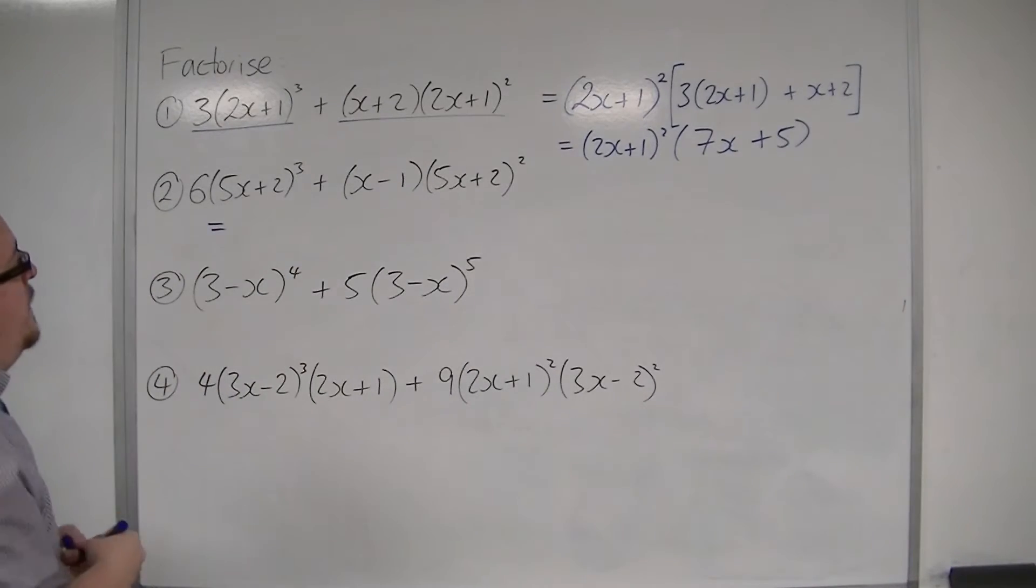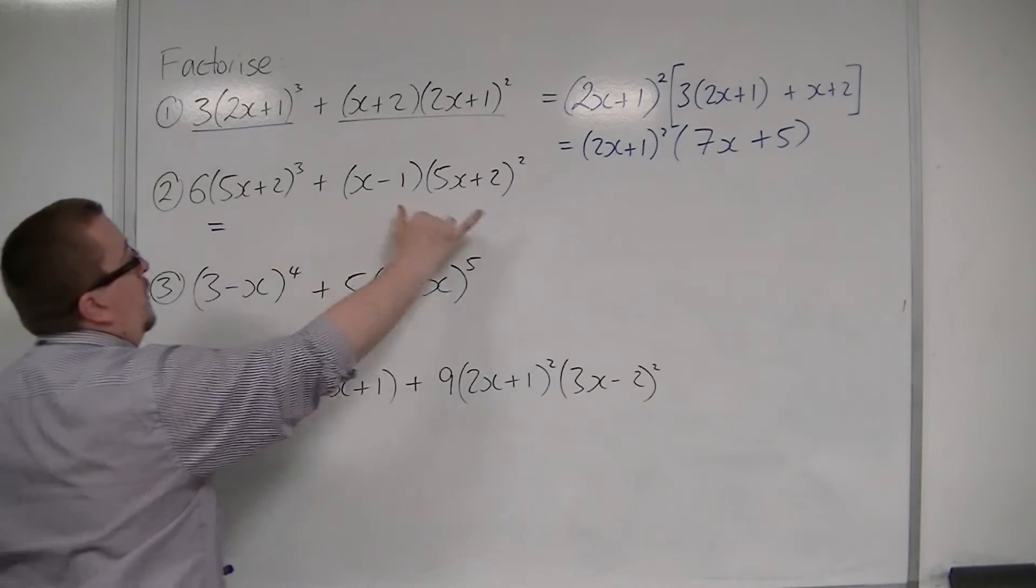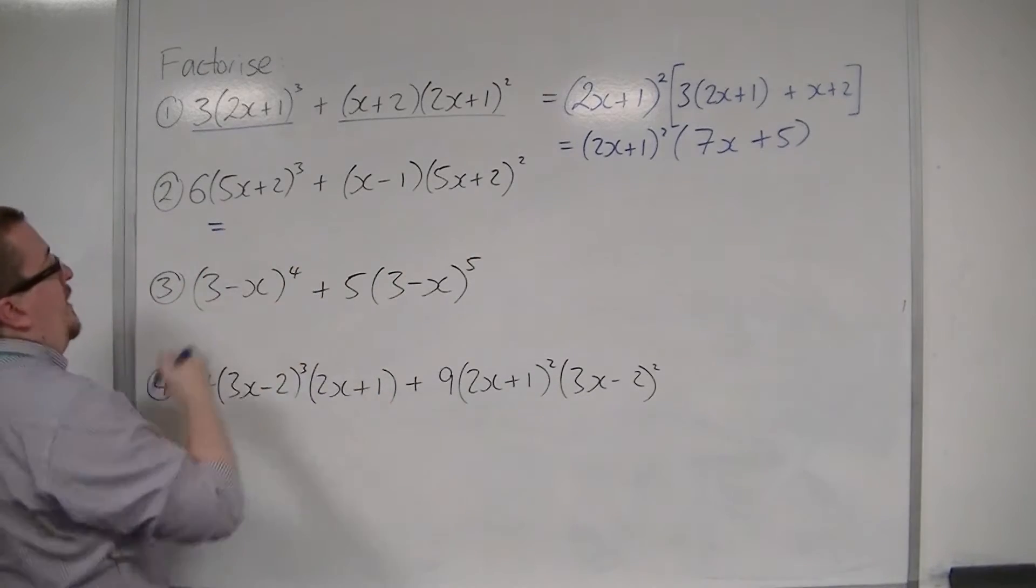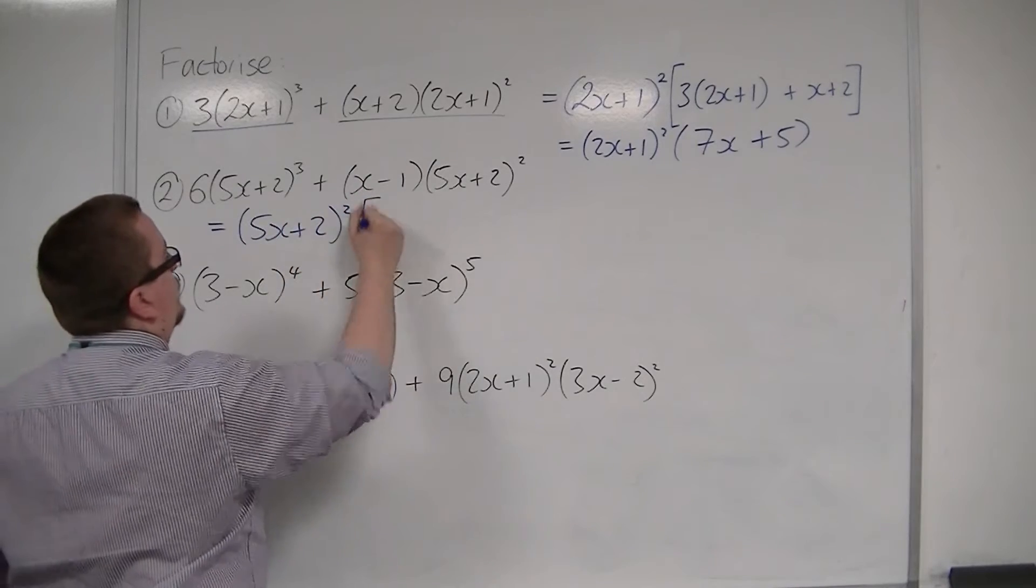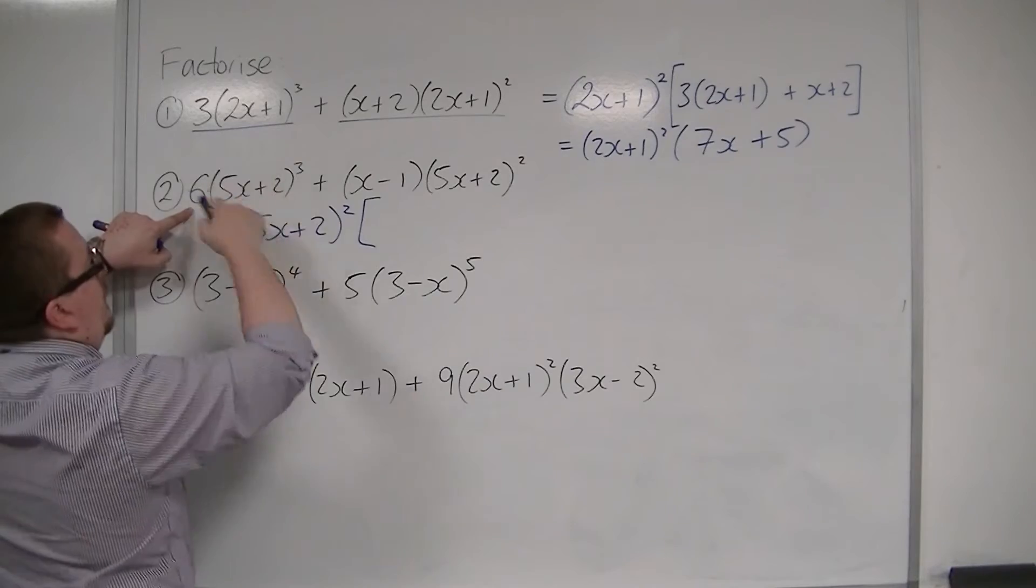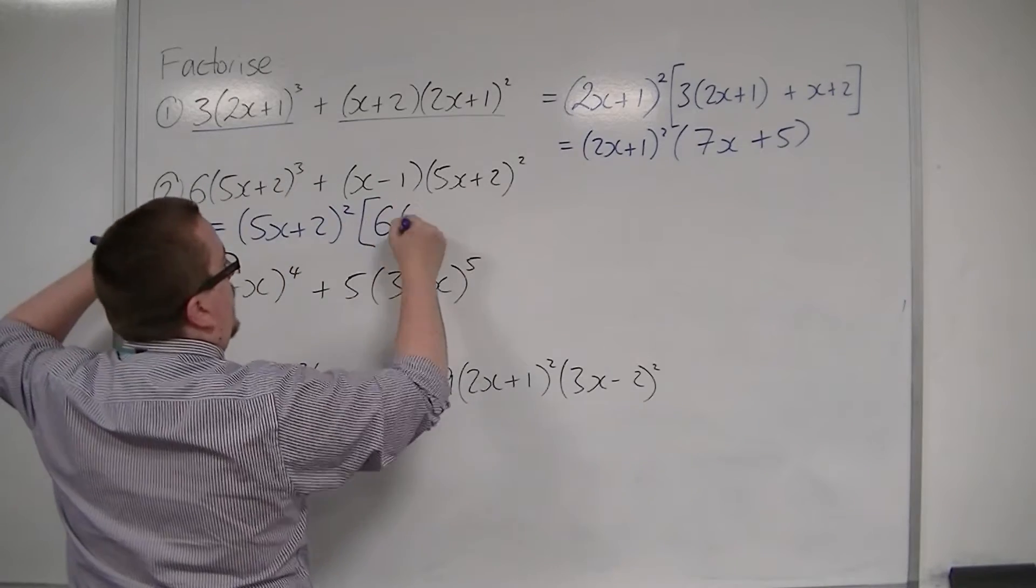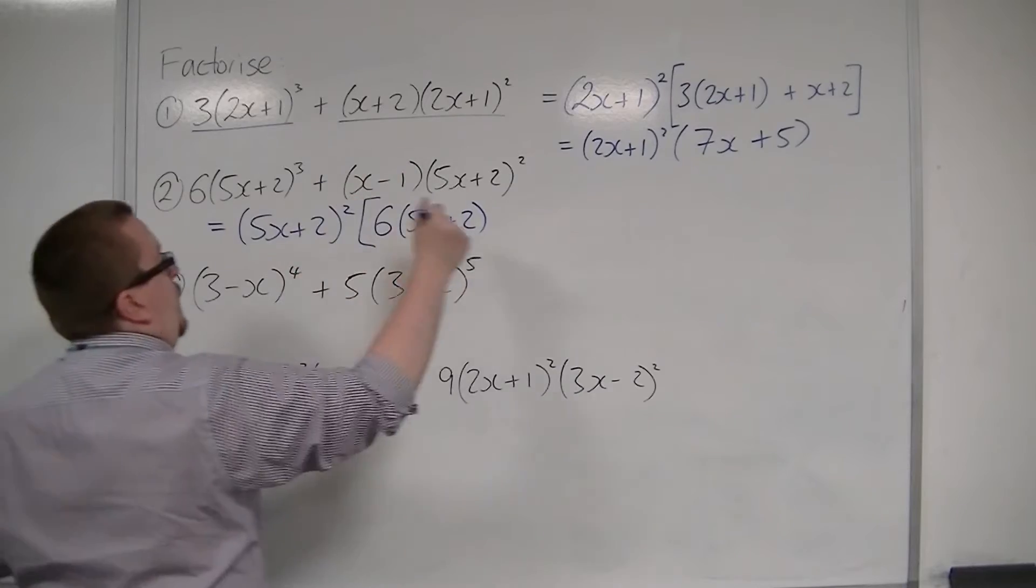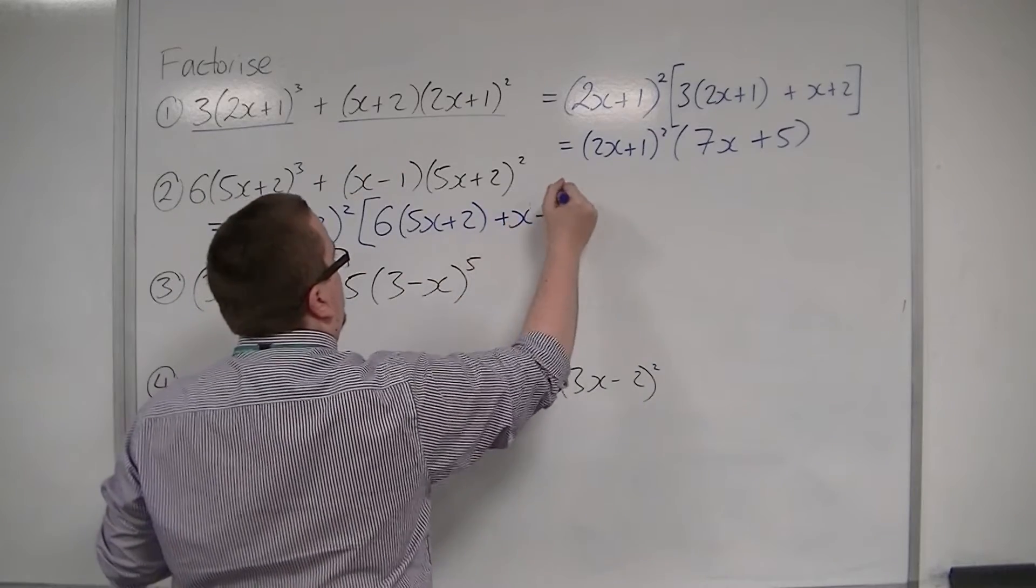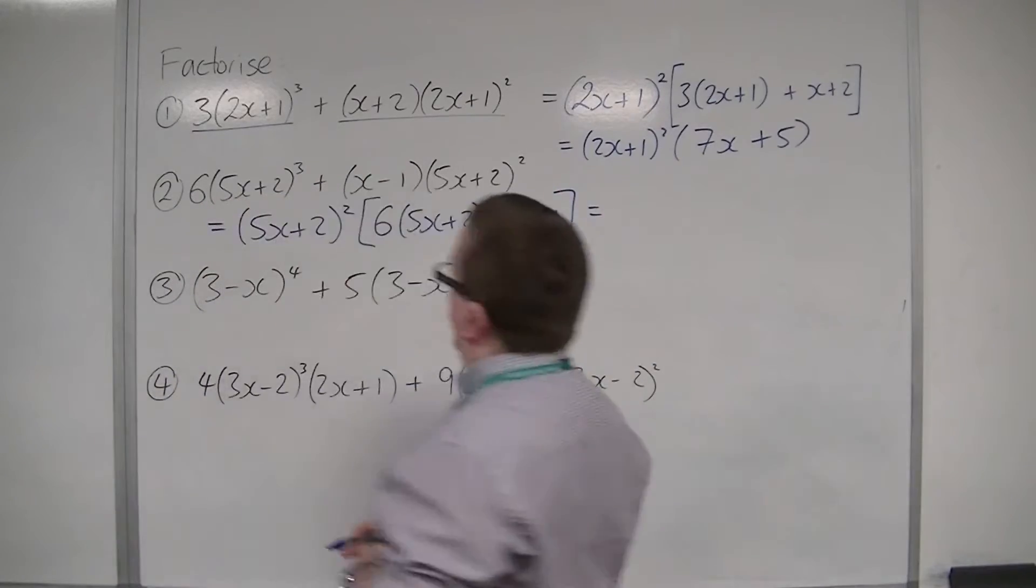For this one, we have a 5x plus 2 squared, which can be brought out of both terms. So, 5x plus 2 squared comes out the front. I'm going to be left with six lots of a 5x plus 2 there. And over here, I'm going to have that x minus 1.